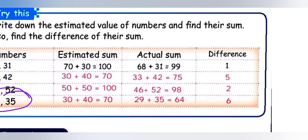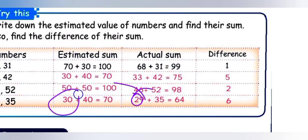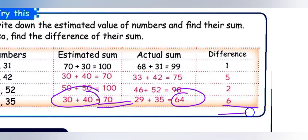Next: 29 plus 35. Actual sum is 64. Estimated: 29 — ones place 9 is more than 5, so 2 tens becomes 3 tens, giving 30. 35 — ones place 5 equals 5, so 3 tens becomes 4 tens, giving 40. Estimated sum: 30 plus 40 equals 70. Difference: 70 minus 64 equals 6.